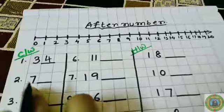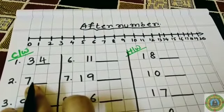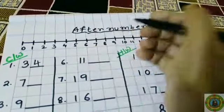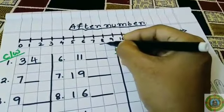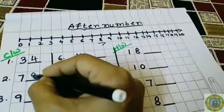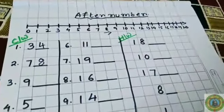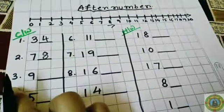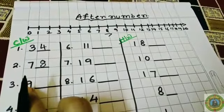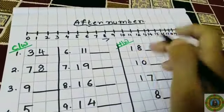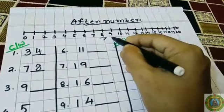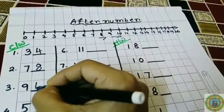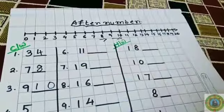Question number 2: What comes after 7? The answer is 8. So we have to write 8. Question 3: What comes after 9? 9 is here. The answer is 10. So we have to write 10.